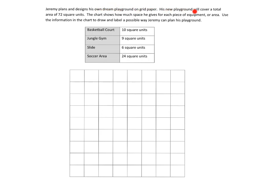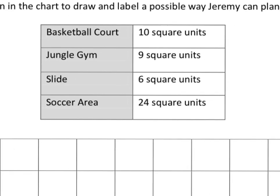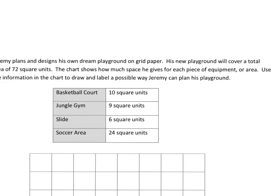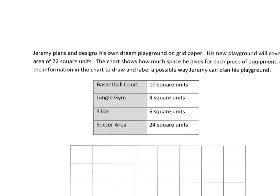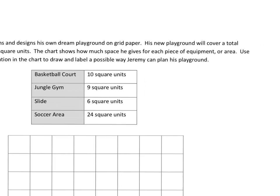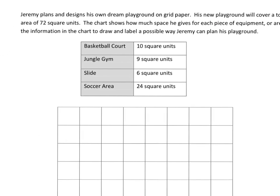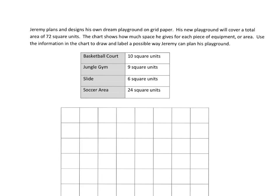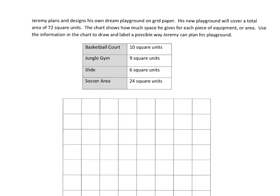So his new playground, in fact I'm going to zoom in on this, his new playground will cover the area of 72 square units. The chart shows how much space he gives for each piece of equipment or area. So then use the information in this chart to draw and label one possible way that Jeremy can plan his playground.